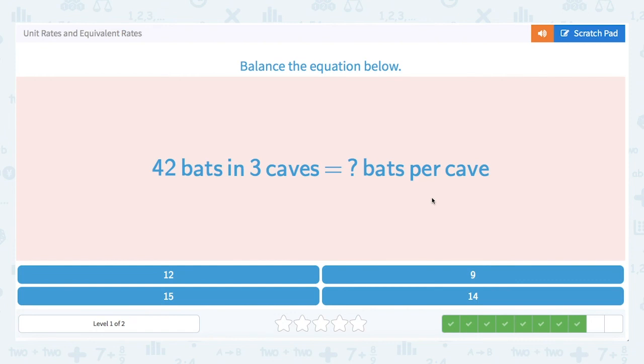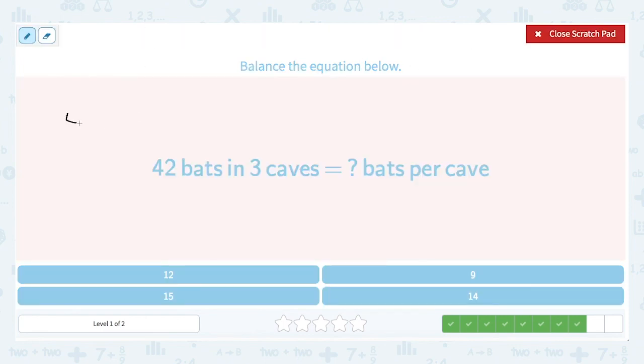42 bats in three caves is how many bats per cave? So 42 divided by three, that one might not be quite as easy to do mentally. So let's go ahead and set up a division problem. 42 divided by three. Three goes into four one time. And three goes into 12 four times, and that'll go in evenly. So when we subtract, we have no remainder. So this is 14 bats per cave.